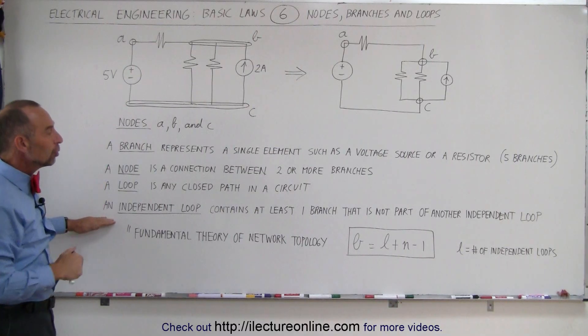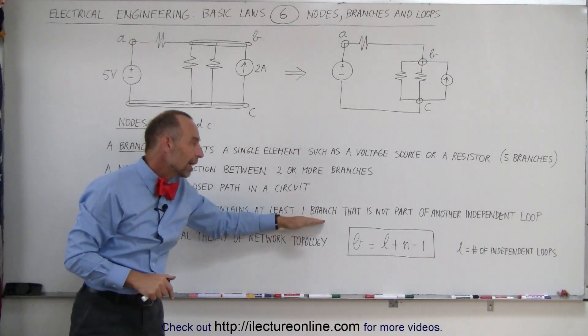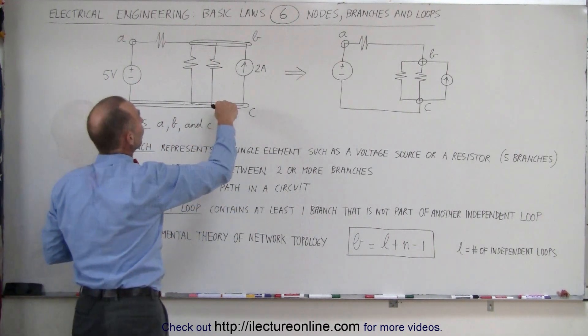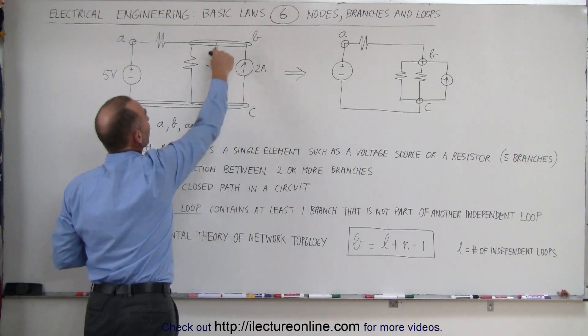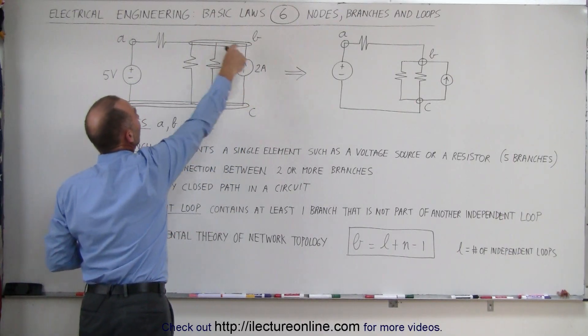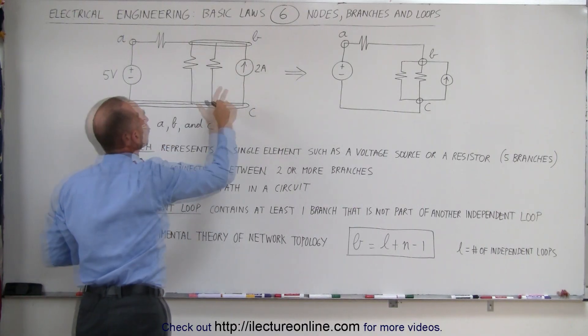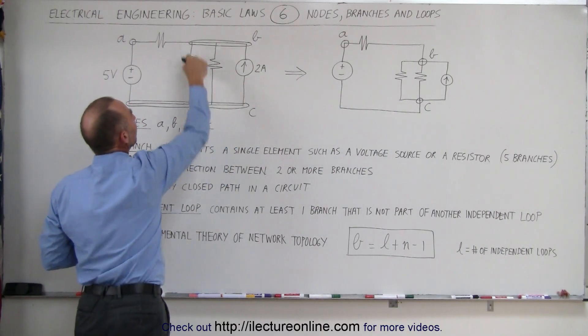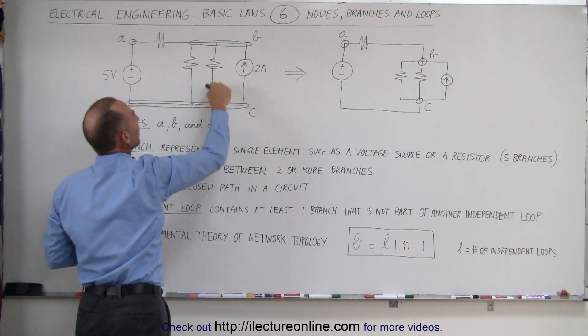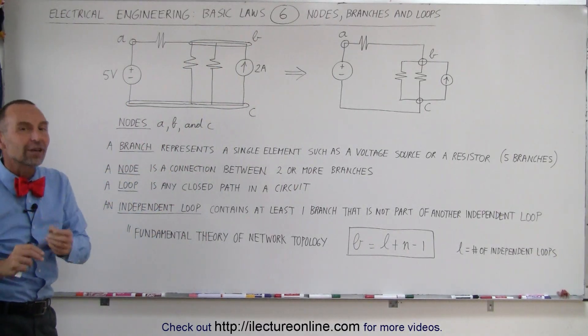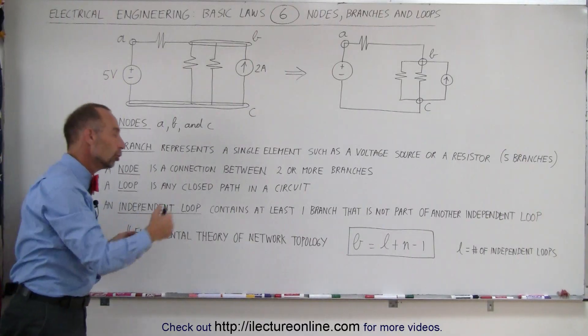An independent loop contains at least one branch that is not part of another independent loop. If you look at this loop right here and then you look at this loop right here, notice that this resistor is not a branch of this loop. Therefore this would be an independent loop relative to this loop, as long as it contains at least one branch that is not contained in the other loop.